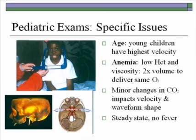Pediatric exams have very specific issues. Young children have the highest velocities normally and are usually anemic. The low hematocrit and viscosity means that you need two times the volume of flow to deliver the same level of oxygen. Minor changes in CO2 will also impact velocity and waveform shape, so you must make sure children aren't falling asleep and velocities are drifting higher. Children need to be in a steady state — not in the midst of a sickle crisis and with no fever — and although it is tempting to perform studies when they are in the hospital, it is better to do them at a steady state.